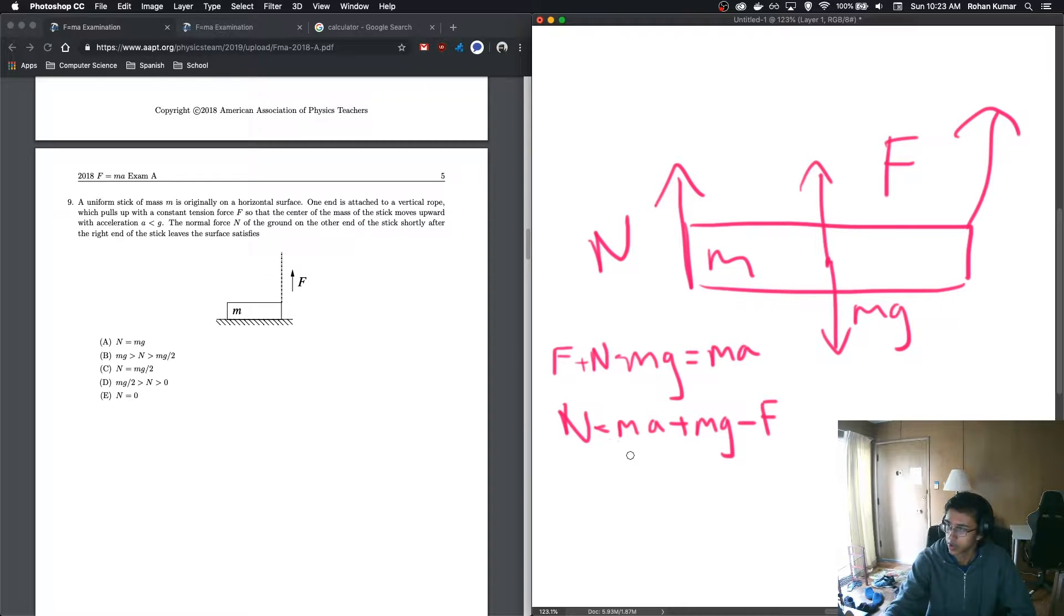We have this, and we want to look at our options. We have N is equal to Mg. Could we say anything about that? Well, we have an MA and an F, which we both don't know. So we don't have enough information yet. So let's see what else we can find out. Maybe we could use torque.